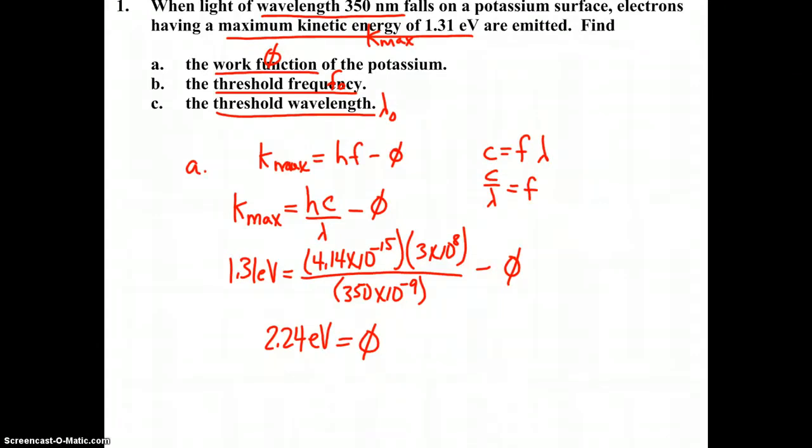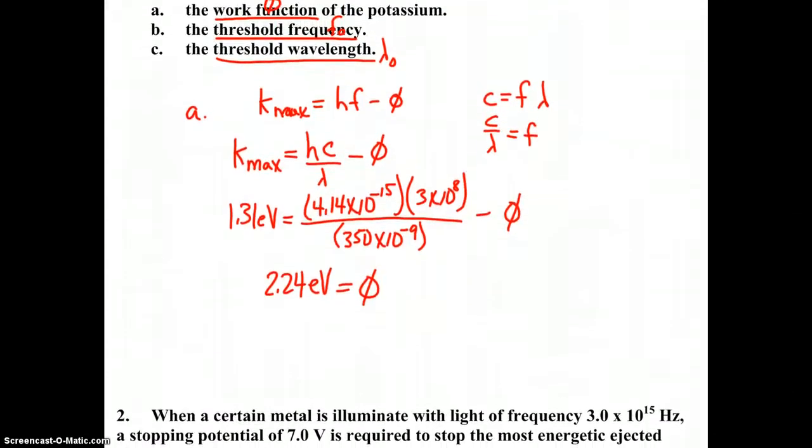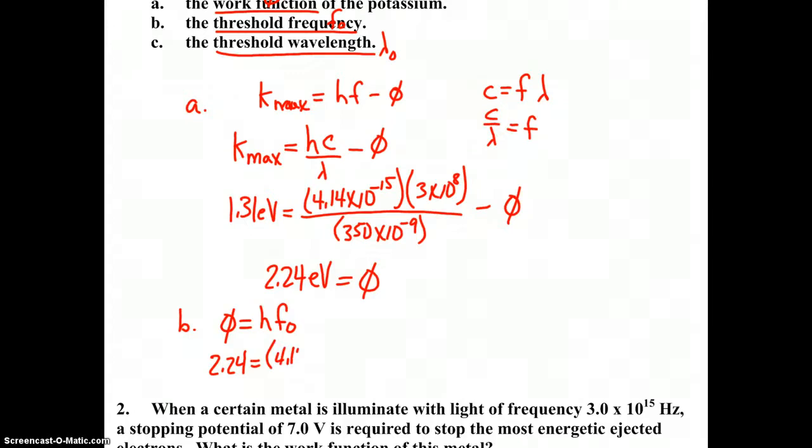We're going to use this information for parts b and c. For part b, our work function phi equals hfo. Substituting 2.24 equals 4.14 times 10 to the negative 15 times fo. Solving for the threshold frequency fo, we get 5.41 times 10 to the 14th hertz.